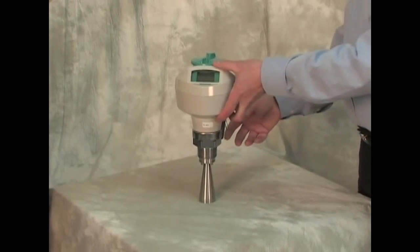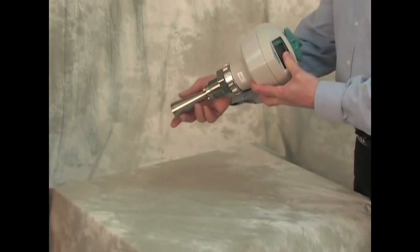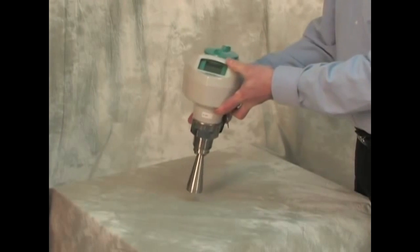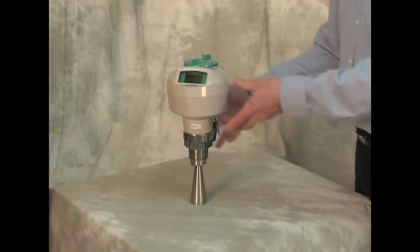Because the Siemens LR250 transmitter has a small horn and a narrow beam angle, it can be installed practically anywhere in your vessel. The two-wire installation helps reduce wiring costs.